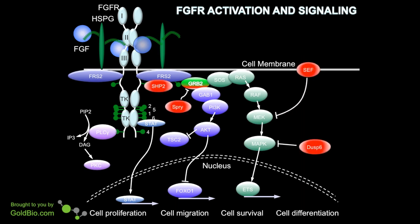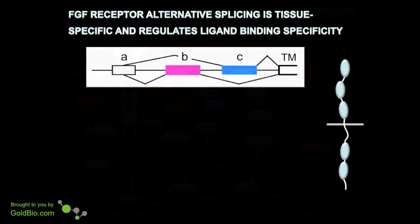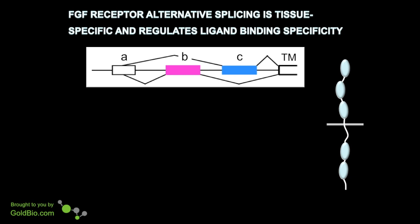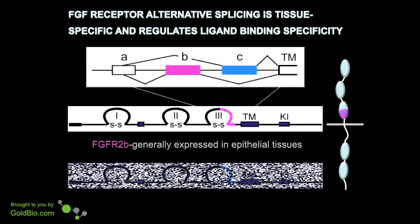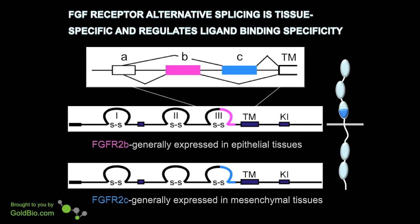Because this is a potent and complex signaling pathway, many mechanisms have evolved to dampen the activity of the pathway. Shown in red are a number of different molecules that have negative regulation of the signaling pathway, which are important to control its activity in a variety of cells. The FGF receptor is alternatively spliced, and this is important because it regulates the specificity of different FGF ligands. The alternative splice forms are located in the third immunoglobulin-like domain. The FGF receptor 2B splice form is generally expressed in epithelial tissues, allowing the receptor to bind to and be activated by FGF ligands generally expressed in mesenchymal tissues. The FGF receptor 2C splice form is generally expressed in mesenchymal tissues, and allows this splice form to be activated by FGF ligands expressed in epithelial tissues.